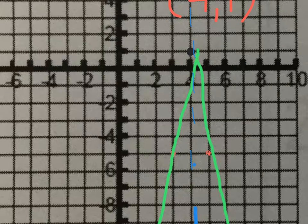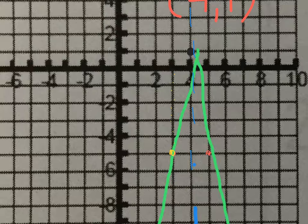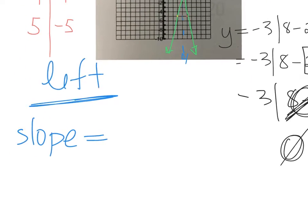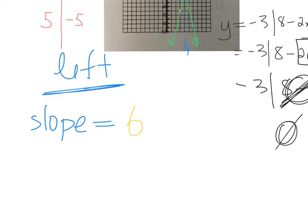Let's come back here and let's just use our nice fingers to count. We start at this point and we go up 1, 2, 3, 4, 5, 6 units and over right 1 unit. So this has a slope of positive 6.